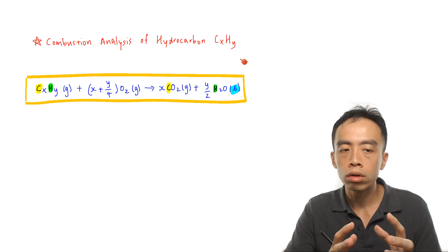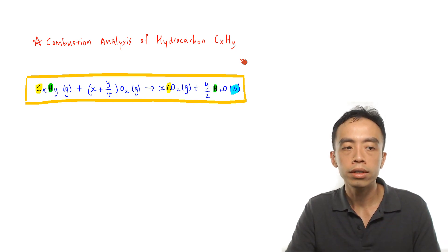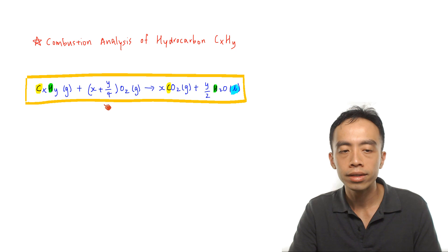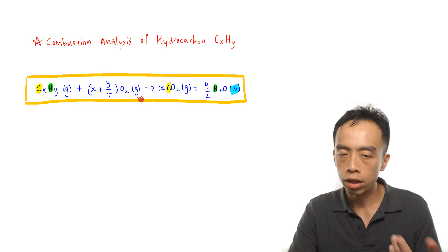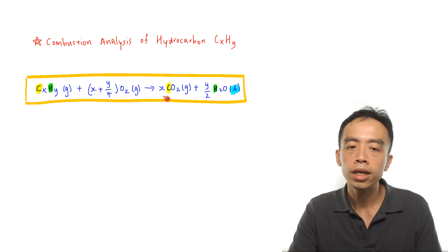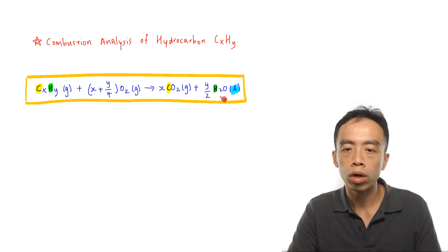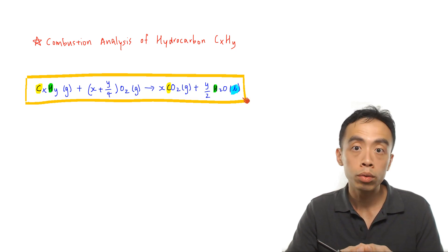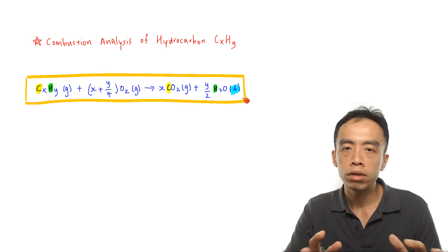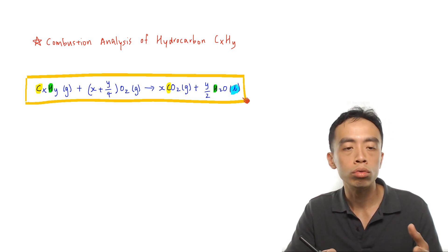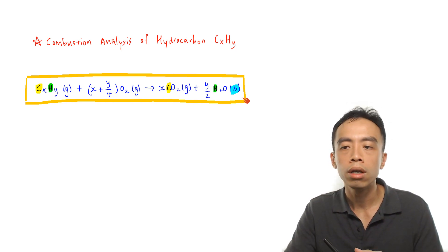The overall equation is: CₓHᵧ (gaseous) plus (X + Y/4) O₂ (gaseous) gives X CO₂ (gas) plus Y/2 water. Usually water is in a liquid state if everything is measured at standard conditions or at room temperature and pressure.